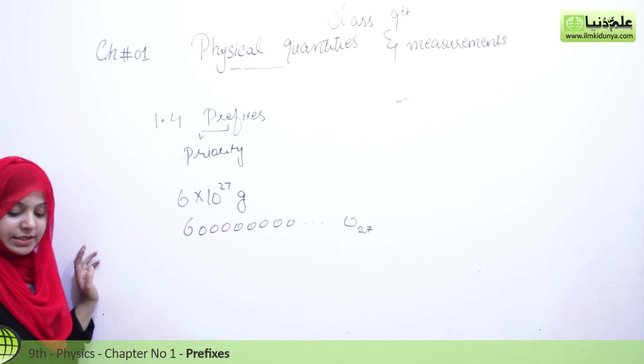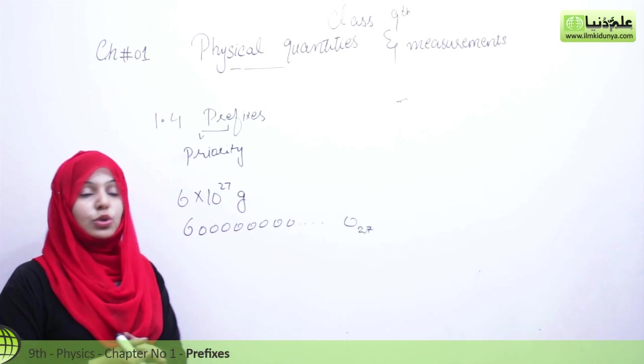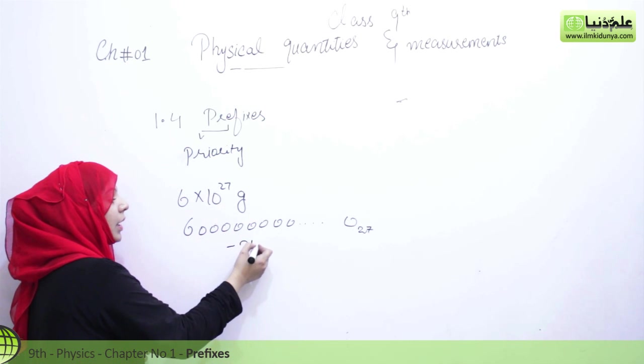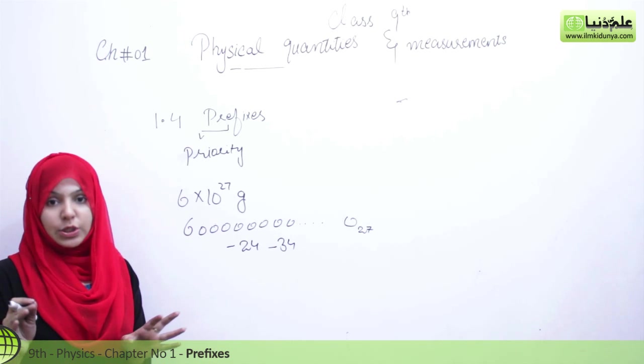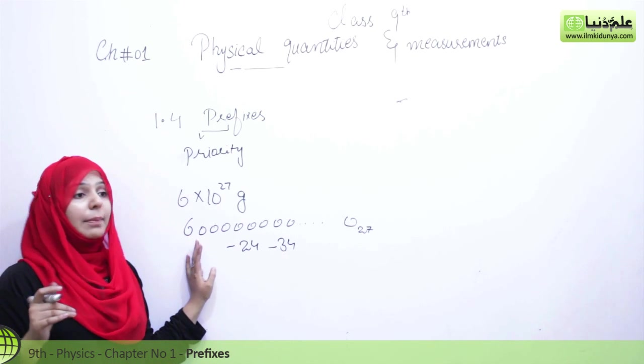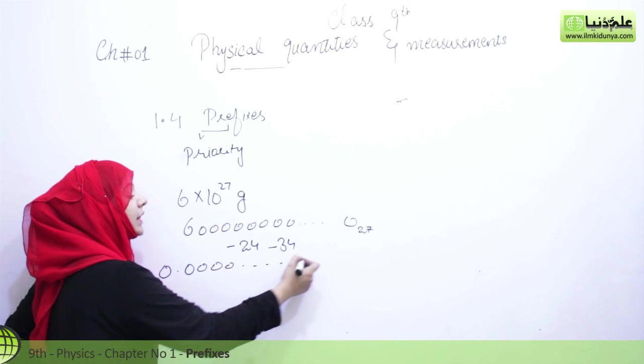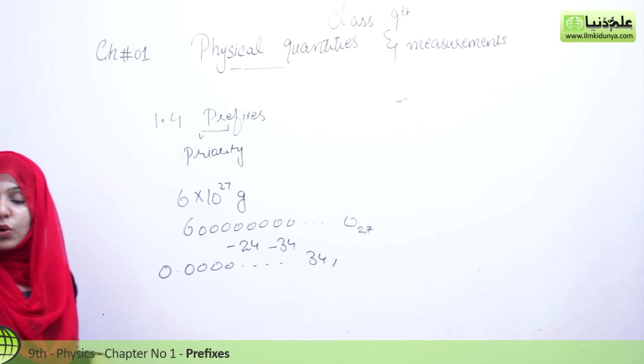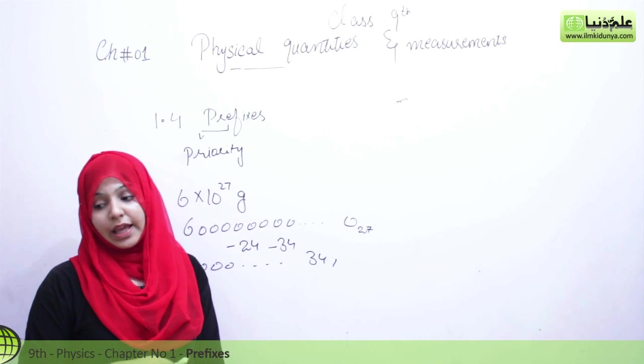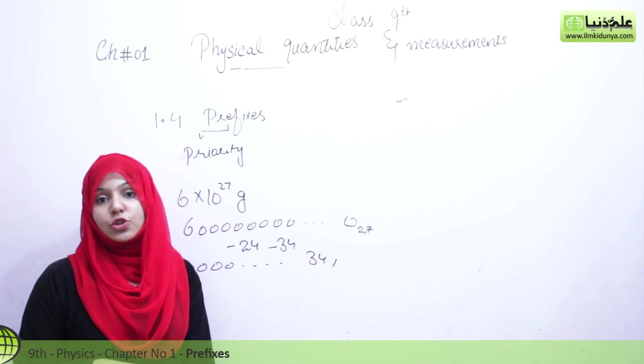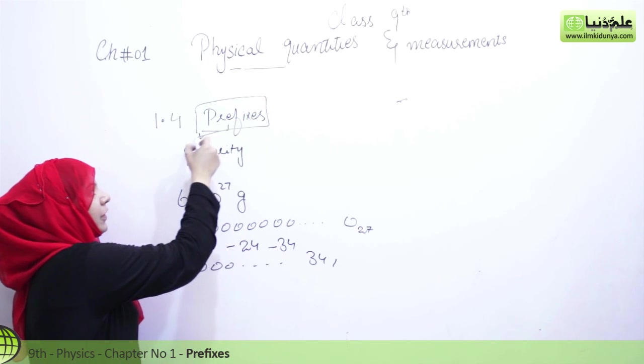Similarly, sometimes we have nucleus mass or proton mass which is very small, even going into negative values - minus 24, minus 34. So minus 34 is a very small quantity. Now such small quantities we cannot write as 0.0000... up to 34 digits. In this there is no accuracy, no authentic result, and it is very time consuming. That's why we use a system called prefixes.